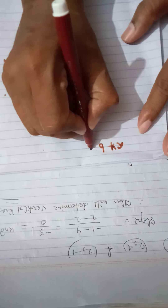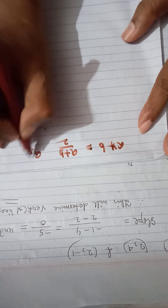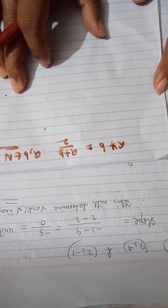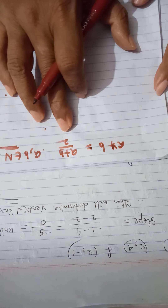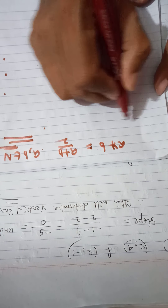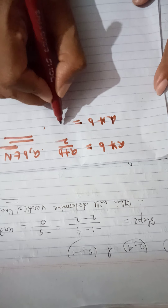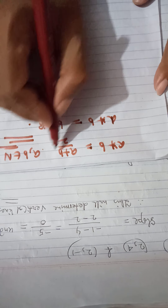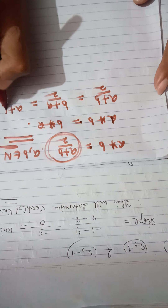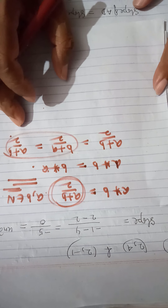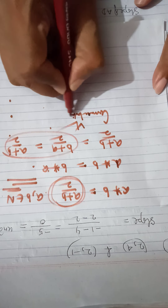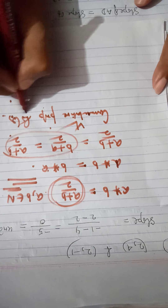Another example: suppose a star b equals (a + b)/2 for a, b belonging to natural numbers. Prove it is commutative and check if it is associative. For commutative: a star b = (a+b)/2, and b star a = (b+a)/2 = (a+b)/2. Both are equal, so commutative property holds.